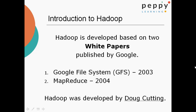Introduction to Hadoop. Hadoop is developed based on two white papers published by Google. As we are aware, Google is a search engine company and they process huge amounts of data for their search engine. In 2003, Google published a white paper named GFS, the Google File System, to store huge amounts of data. In 2004, Google published another white paper called MapReduce, which can be used for distributed data processing. Hadoop was developed by Doug Cutting. The name Hadoop is the toy name of his son.